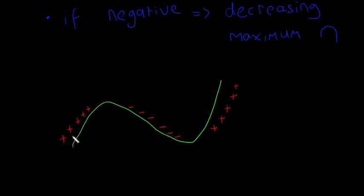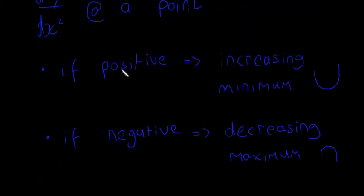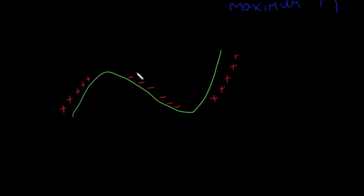So basically, that's why that is, because it goes from plus to minus. So if you get d²y/dx² at a point and it's negative, that's because of this. And the same thing, if you get d²y/dx² at a point and it's positive, that means it's increasing and it's a minimum, because it's going from minus to plus. So that means it's increasing.